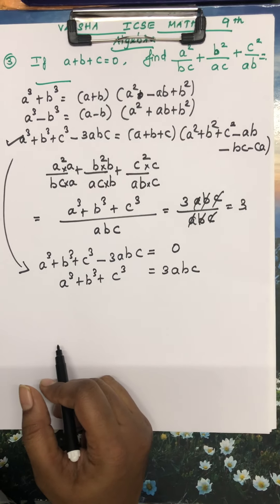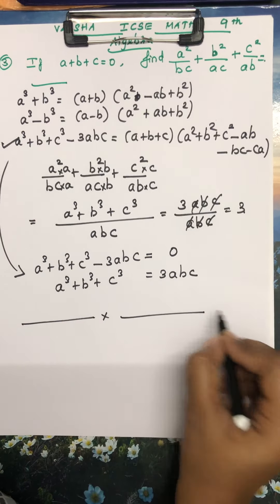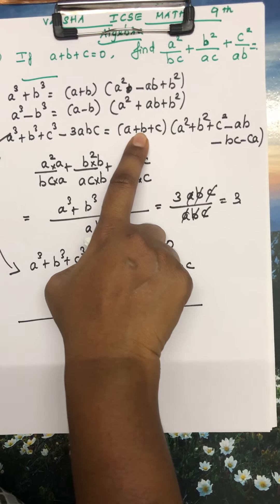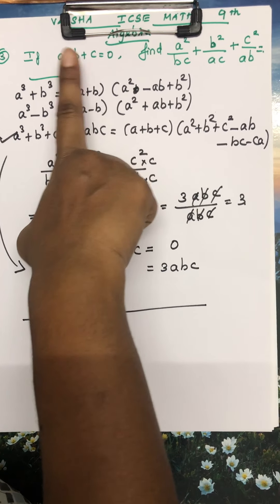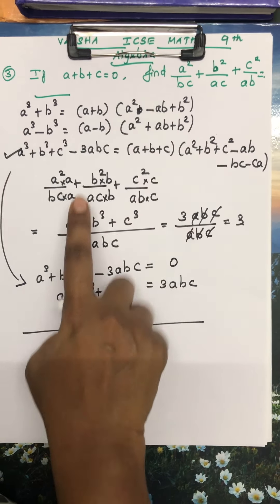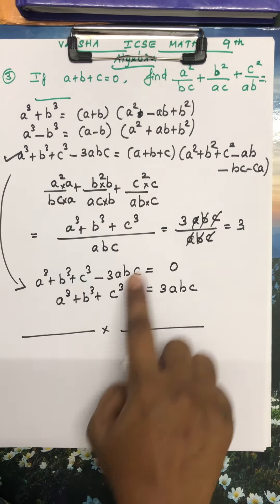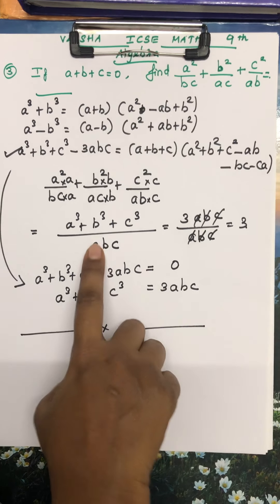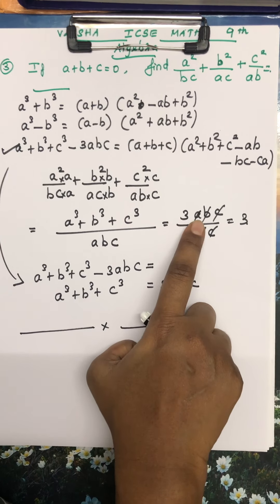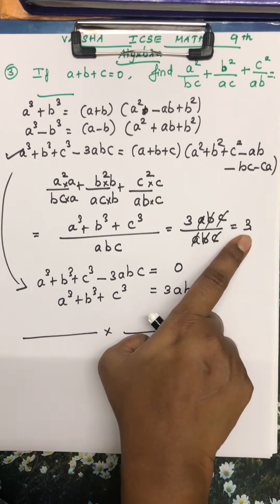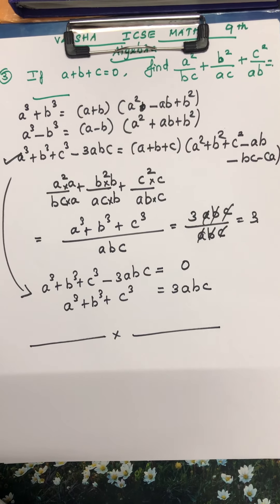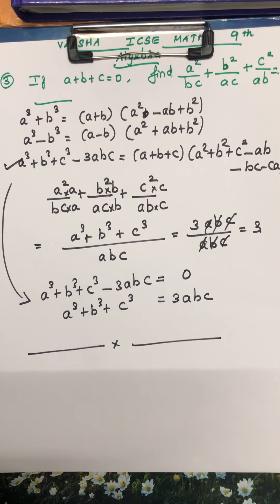The answer is 3. Do you understand? Do you have any doubt? In the identity, since A plus B plus C equals 0, the RHS becomes 0, so 3ABC moves across. Therefore A cube plus B cube plus C cube equals 3ABC, and when you cancel you get 3. I hope you all understand. After seeing the video, do the sum. Thank you students.